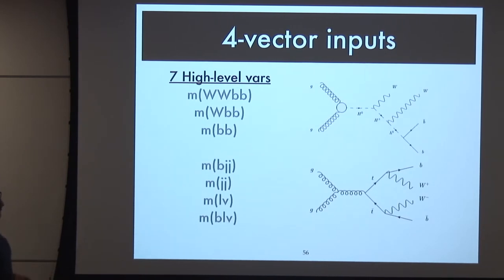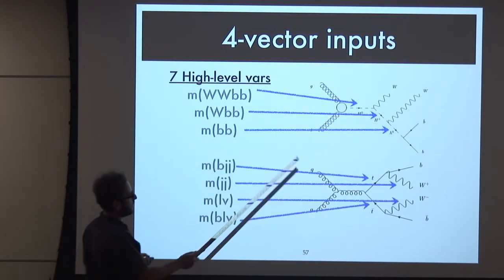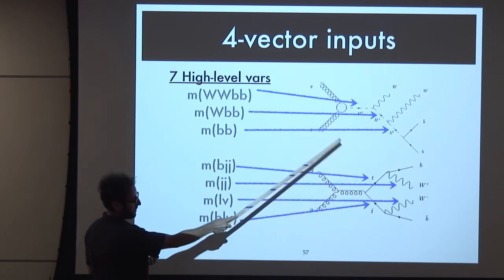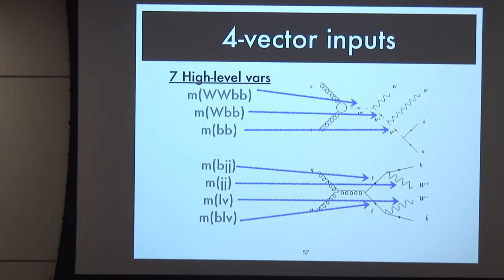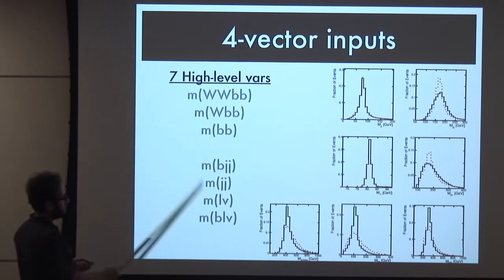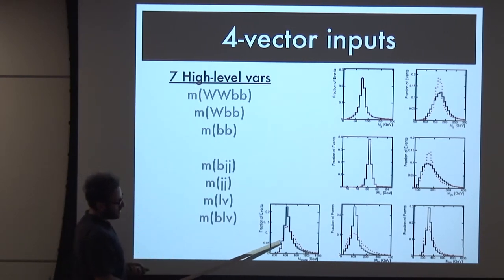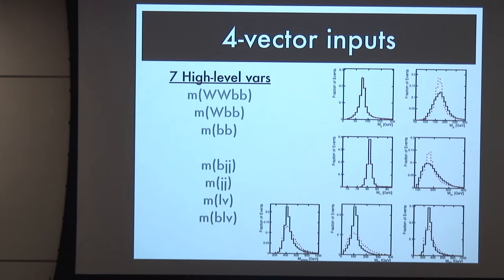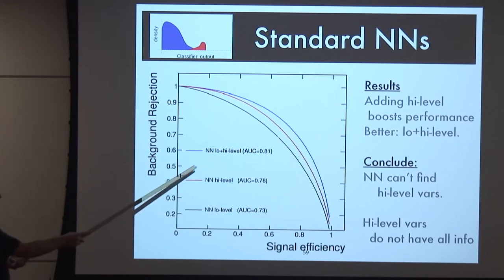As a physicist, you know how to give clues to the network. The signal has resonances in MBB where the background doesn't, resonances in MWBB and MWWBB. The background has its own peaks you can use to discriminate. Using seven high-level variables, these distributions do a better job of separating signal from background. Critically, these high-level variables are only functions of the low-level information - there's no additional information, just physics clues. A single-layer neural network with these seven inputs was used as the baseline.